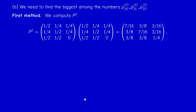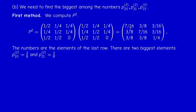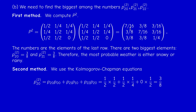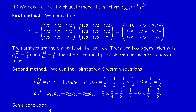The answer is a little bit different because now P² is given by this matrix, and the numbers in the last column are three over eight, three over eight, and one over four. You can also compute them directly by using the Kolmogorov–Chapman equations.